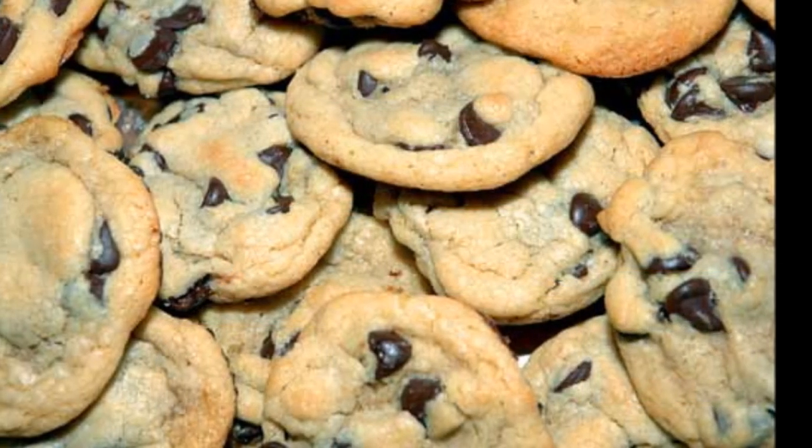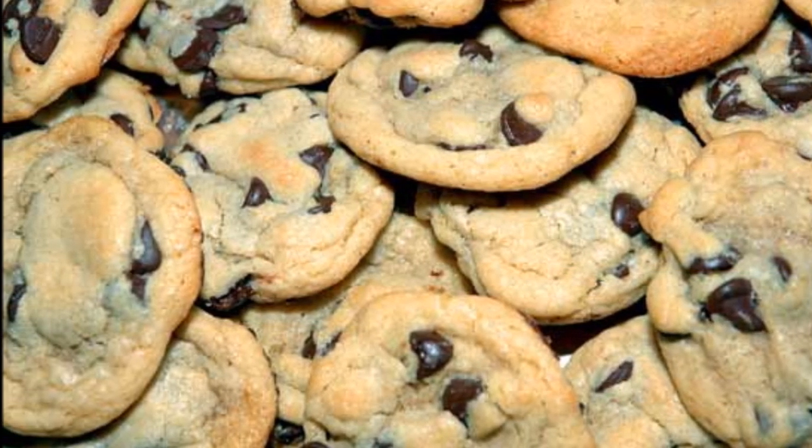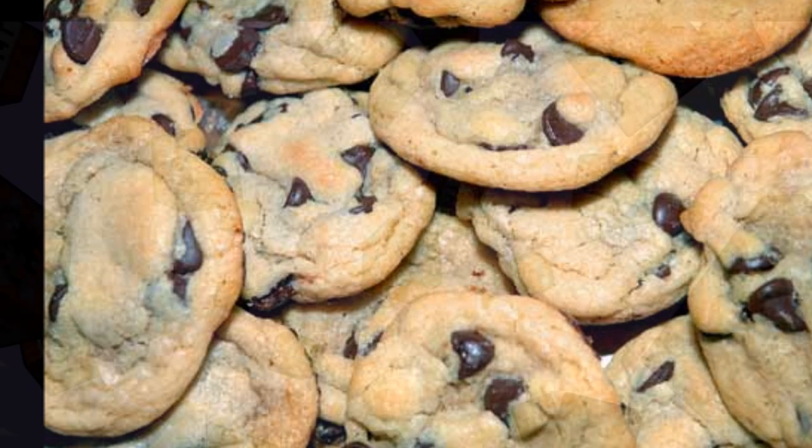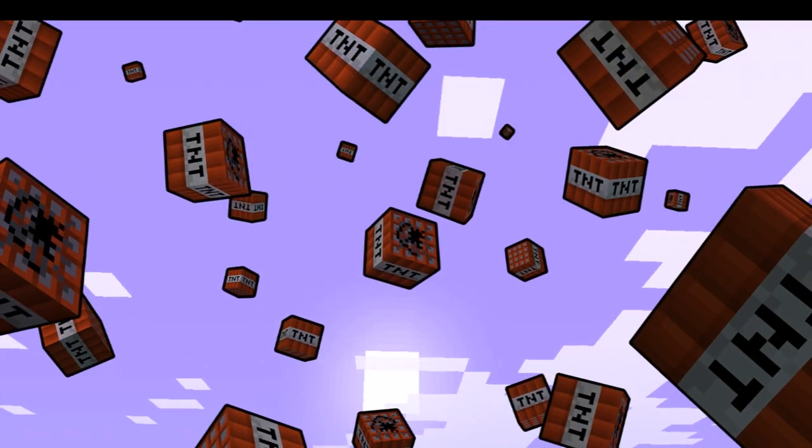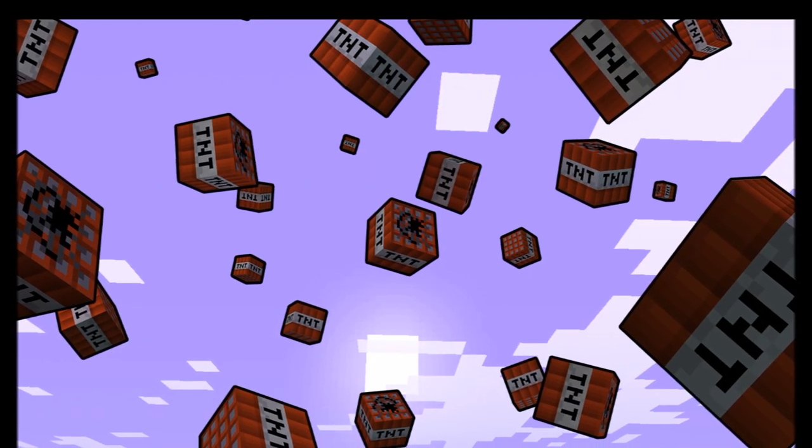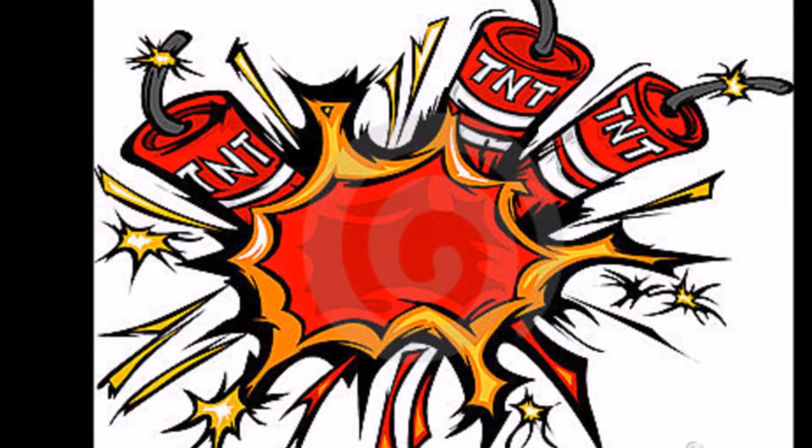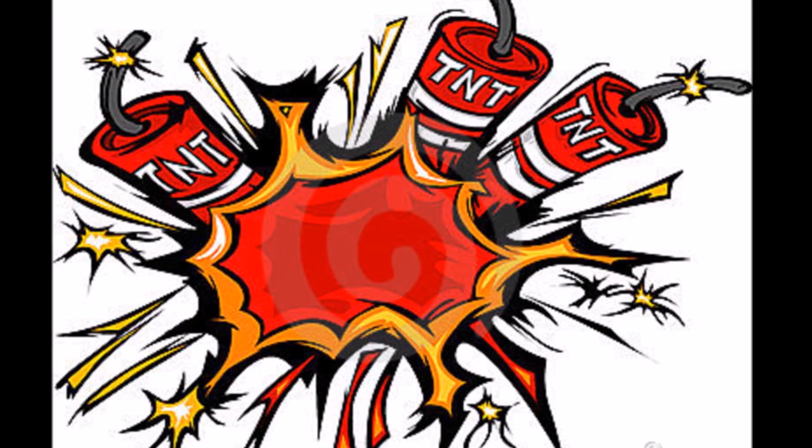Chocolate chip cookies, for example, have 21,000 joules per gram of energy, while TNT has only a measly 2,700 joules per gram. However, TNT releases its energy all at once,